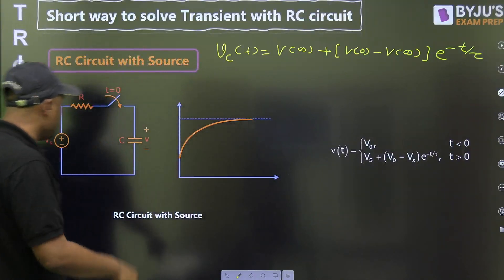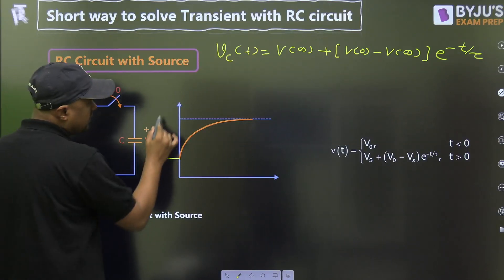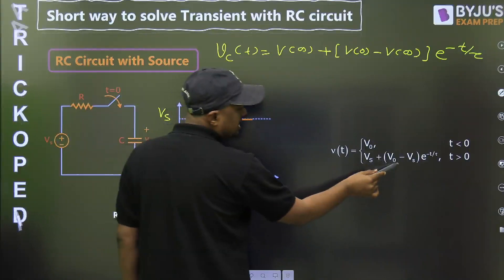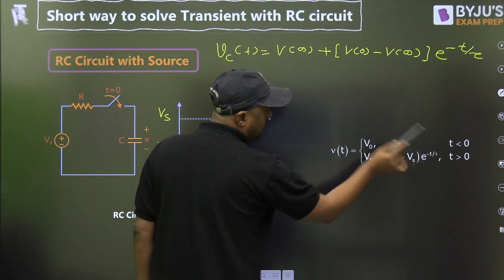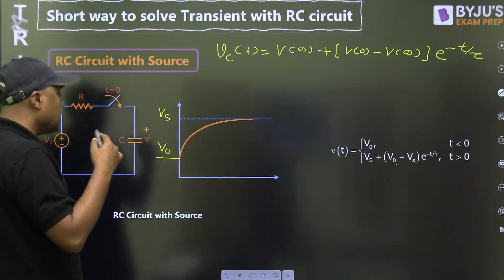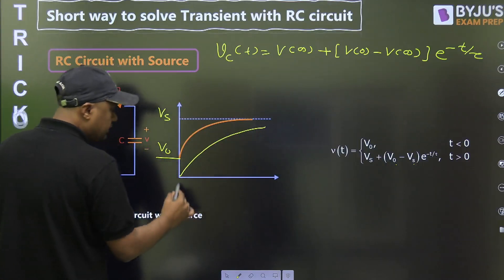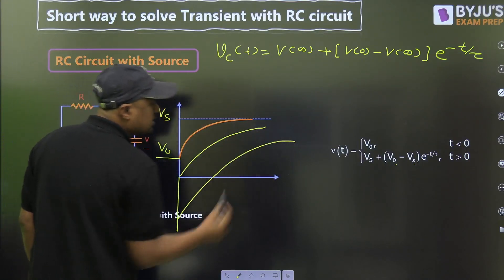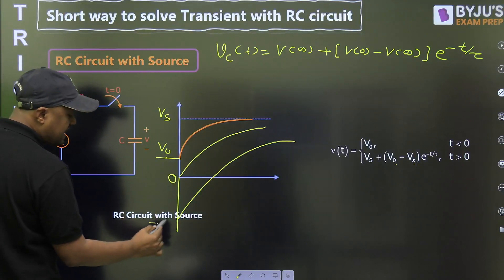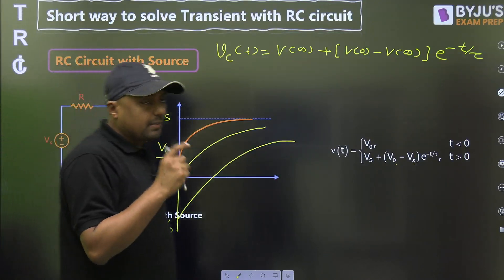For example, in this circuit, if the initial voltage is V₀ and the final voltage is Vs, then those are the initial and final values in the formula. If the initial voltage is zero, the response starts from zero. If the initial voltage is negative, it starts from a negative value. So there are three cases: positive initial voltage, zero initial voltage, and negative initial voltage.